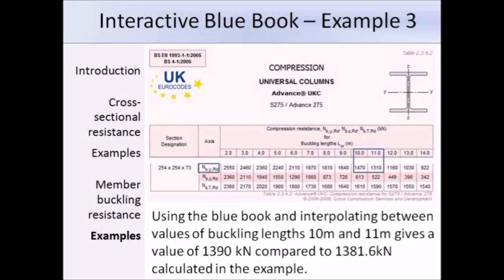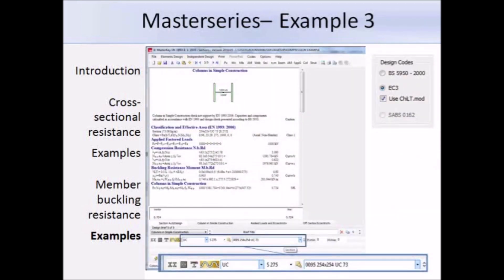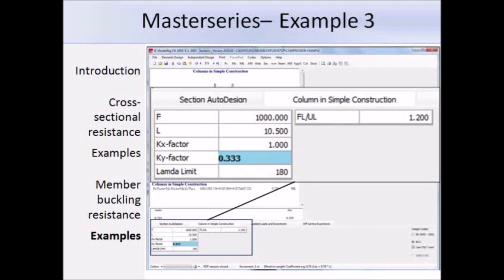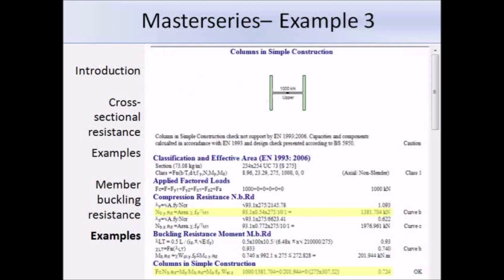Now running the same example in Master Series: the section is input with Eurocode 3 selected, the force is set to 1000 kN, the column length is 10.5 m, the kx factor remains 1 since the column is not laterally restrained in that direction, and the ky factor is changed to 0.33 since the lateral restraints give a spacing of one third of the overall length — 3.5 metres. The software gives a compression resistance of 1381.7 kN and a ratio of 0.724, both matching the CSE TED results.